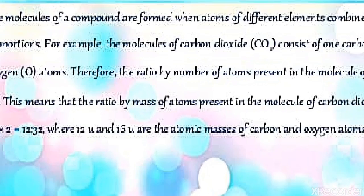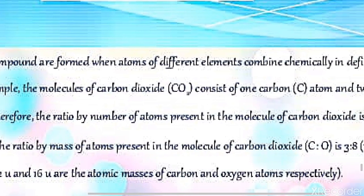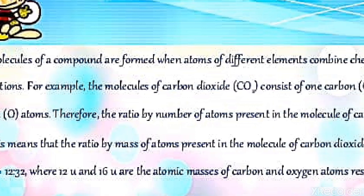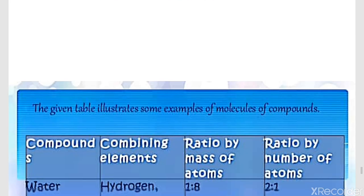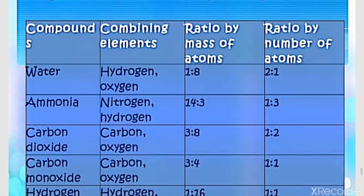Molecules of a compound are formed when atoms of different elements combine chemically in definite proportions. For example, CO₂ consists of one atom of carbon and two atoms of oxygen. In water, two hydrogen atoms combine with one atom of oxygen. In ammonia (NH₃), nitrogen atoms combine with hydrogen atoms. In carbon monoxide (CO), one carbon atom combines with one atom of oxygen.